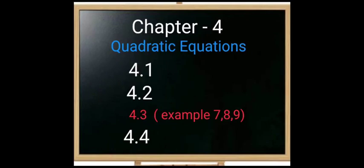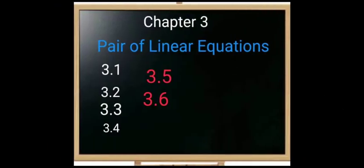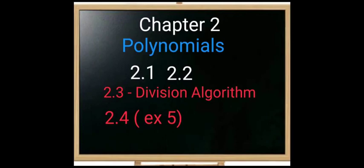In Chapter 4, Quadratic Equations, Exercises 4.1, 4.2, and 4.4 are included; only Exercise 4.3 is completely deleted along with Examples 7, 8, and 9. Note that optional exercises throughout the book are not in the new syllabus. In Chapter 3, Pair of Linear Equations, Exercises 3.1, 3.2, 3.3, and 3.4 are included while Exercises 3.5 and 3.6 are deleted. In Chapter 2, Polynomials, Exercises 2.1 and 2.2 are included while 2.3 and 2.4 are deleted.